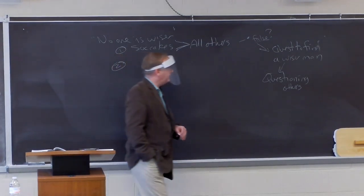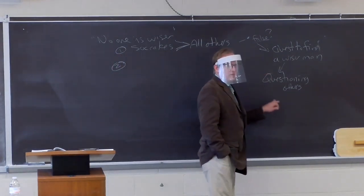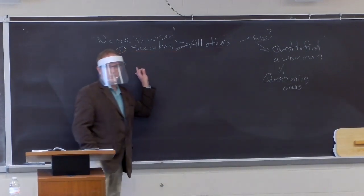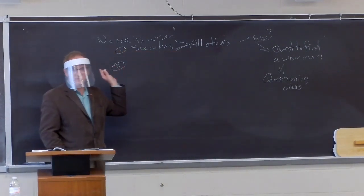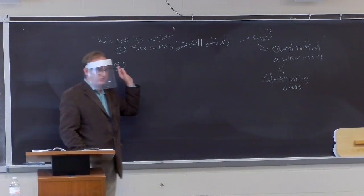I question people, what does he discover? We've got a sort of circular movement here because he comes eventually to his second interpretation of what the oracle says, which is not that Socrates is superior to all other people. It's something else.